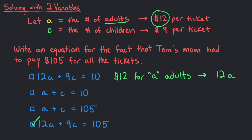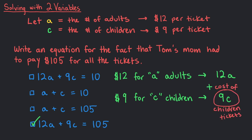In the same way, if each child's ticket costs $9 and there are c children, we have to multiply 9 by c. The cost of adult tickets plus the cost of children tickets must equal the total cost of $105. So 12a plus 9c equals 105.